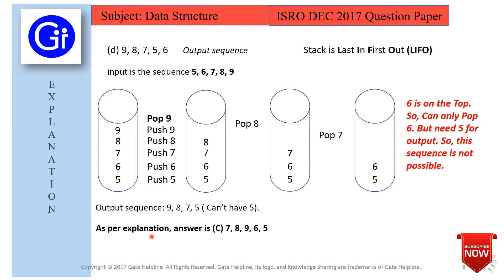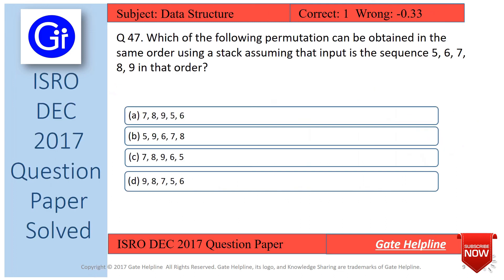As per the explanation, the answer is option C — the output sequence 7, 8, 9, 6, 5 is the permutation we can achieve using a stack with input sequence 5, 6, 7, 8, 9.